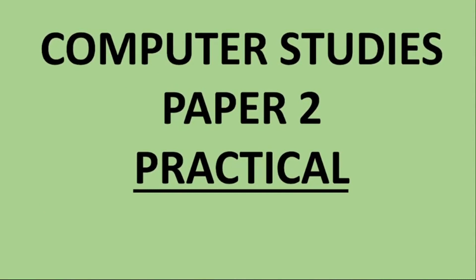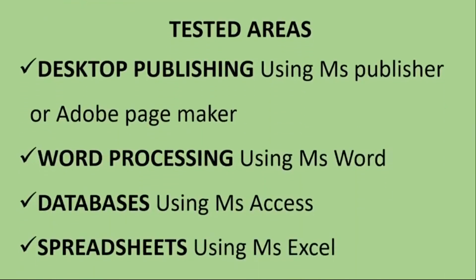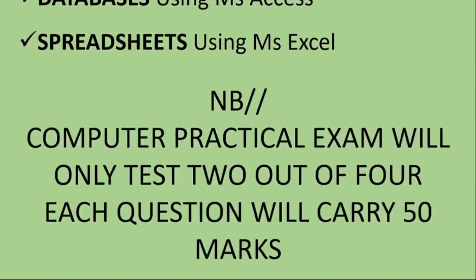Hello guys, I want us to see how we can score good marks in the practical session, that is in computer paper 2. Some tips to start with: we need to know that we test four areas — desktop publishing, in most cases using Microsoft Publisher or Adobe PageMaker; word processing using Microsoft Word; databases using Microsoft Access; and spreadsheets using Microsoft Excel.